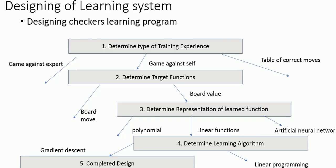These things are represented in a flowchart. First, determine the training experience — this could be games played against an expert, games played against itself, or a table of correct moves. Next, determine the target function, such as board-move or board-value. Then determine the representation of the learned function, such as a polynomial, linear function, or artificial neural network. Finally, determine the learning algorithm and arrive at the completed design.